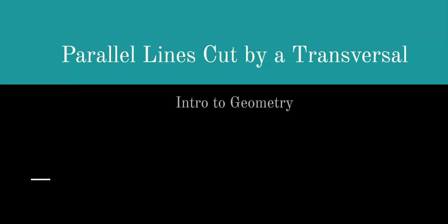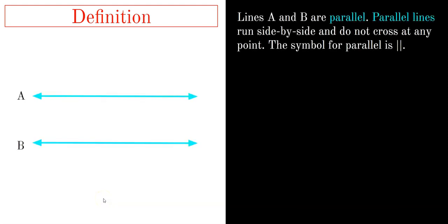This lesson is on parallel lines cut by a transversal. Lines A and B are parallel — parallel lines run side by side and do not cross at any point. The symbol for parallel is two vertical lines. Lines A and B are straight and will never cross each other. By definition, parallel means they will never meet.